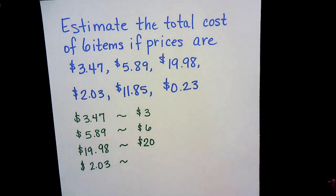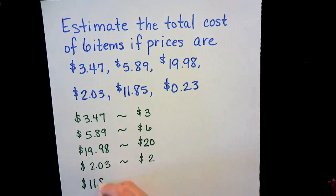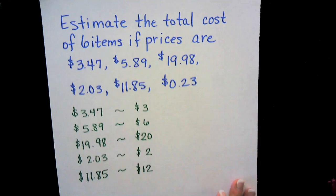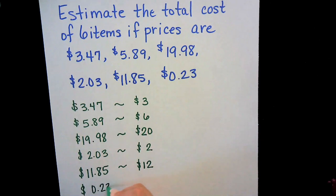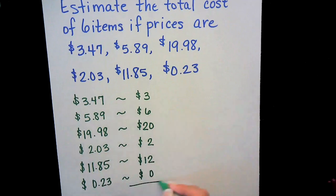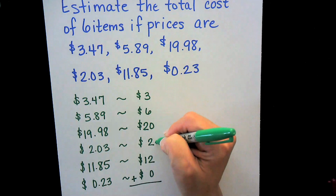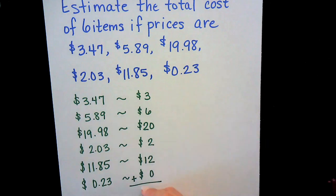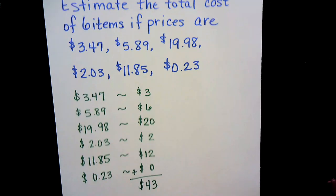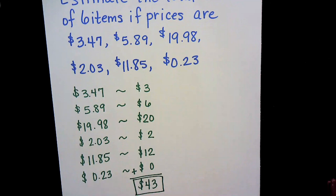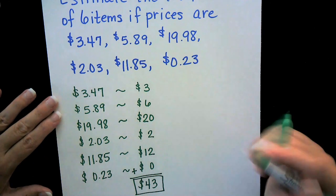Eleven dollars and 85 cents is closer to twelve dollars. Twenty-three cents is closer to zero dollars. Now that I've rounded them all, I can add them up: three plus six is nine, plus 20 is 29, plus two is 31, plus twelve is 43 dollars. That's my estimated total cost. Rounding first makes the calculation much quicker and simpler.